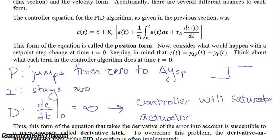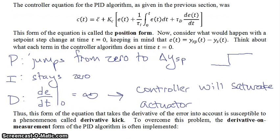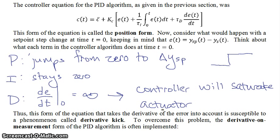Therefore, this form of the equation — the position form — that takes the derivative of the error (dE/dt) into account is susceptible to a phenomenon called derivative kick, where as you change the setpoint, suddenly the derivative is infinity and the controller saturates the actuator. To overcome this problem, a modified form of the positional form is used often, and that modified form is called derivative on measurement.